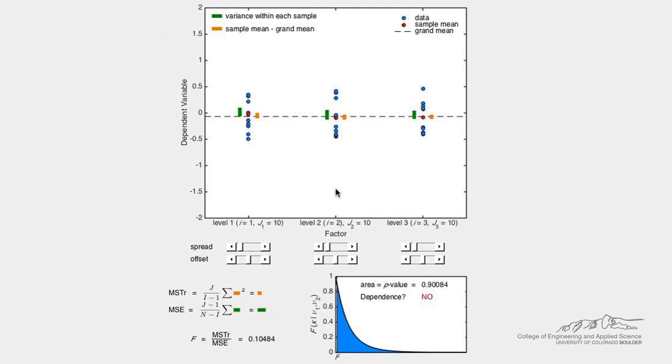Now let's calculate the mean in each experiment, also known as the sample mean and shown on the plot as the red dots. Now let's calculate the grand mean, also known as the mean of the sample means, and indicated as the black dashed line on the plot.